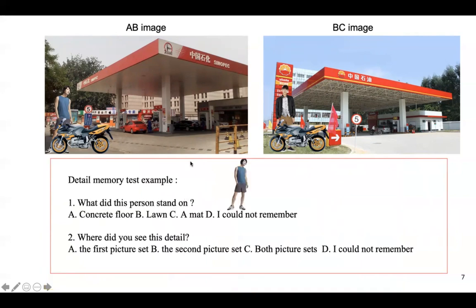In the detail memory test, we will use this man as a cue, and then we will ask five different questions about the details in the same image. For example, we might ask what did this person stand on. In the answers, we provide an answer that is correct, that is concrete floor, and a false memory answer.